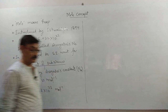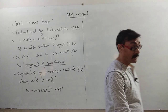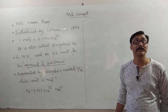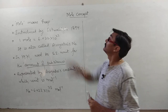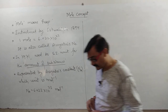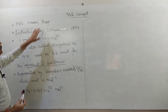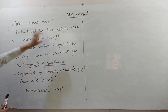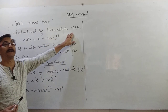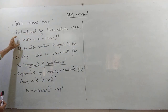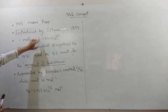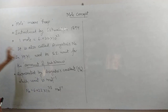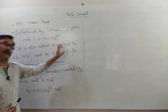Hello students, now we are going to start the first chapter of chemistry. Its first topic is mole concept. The term mole is first introduced by Oswald in 1884. It is equal to 6.022 into 10 to the power 23, and it is also called Avogadro's number.